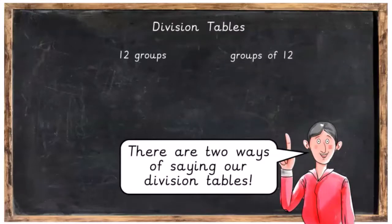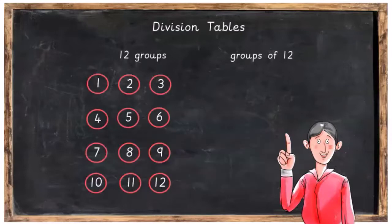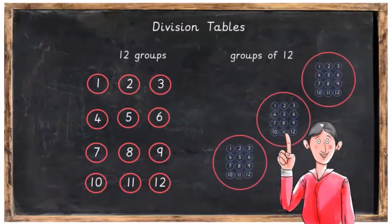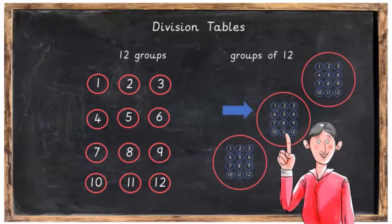There are two ways of saying our division tables. The first way is by saying 12 groups — so here we have 12 groups. The other way of saying it is groups of 12. So here's one group of 12, here's two groups of 12, and here are three groups of 12.